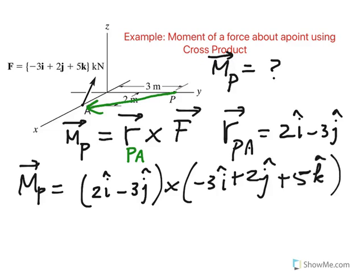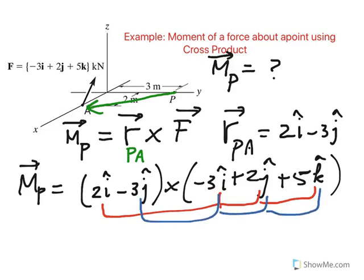Remember you just take the 2I and cross it with 3I, 2J, and 5K. And then similarly, you do that with the second term. So you know how to do the cross product. I'll just give you the outcome right now.